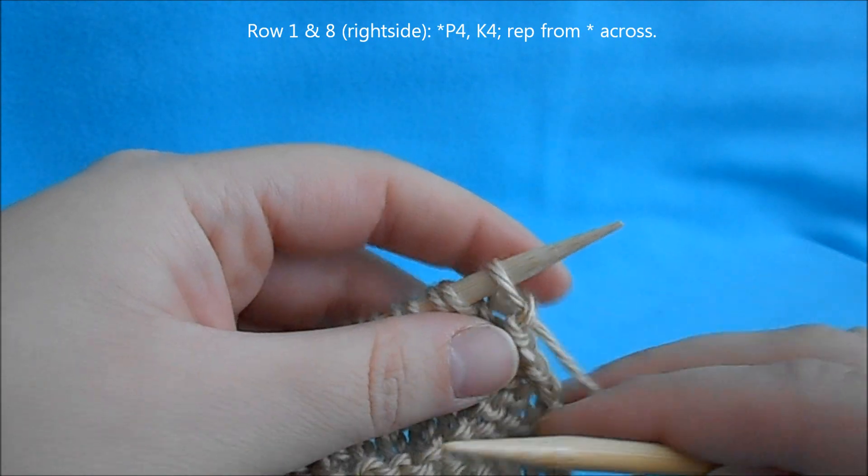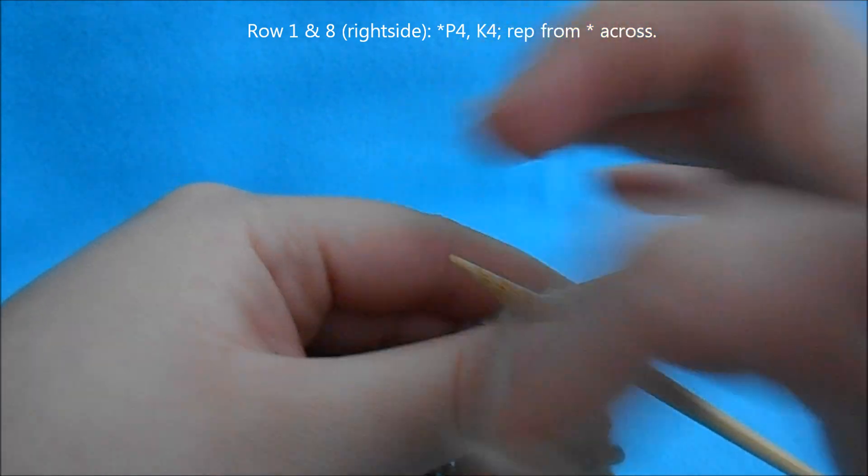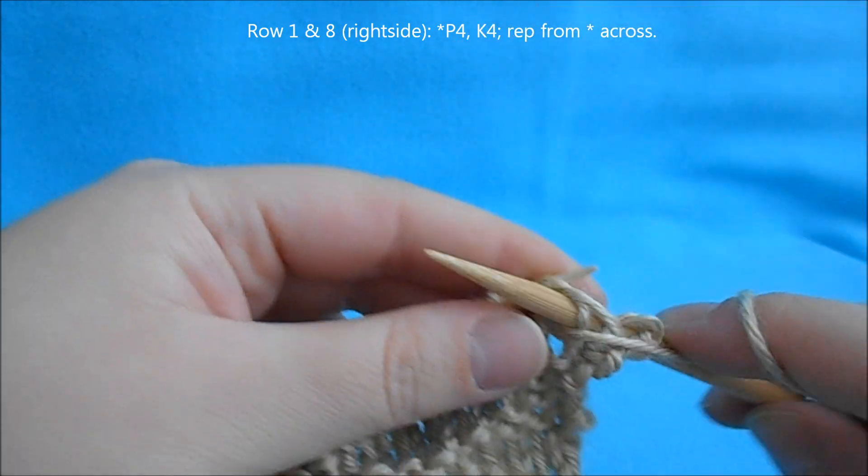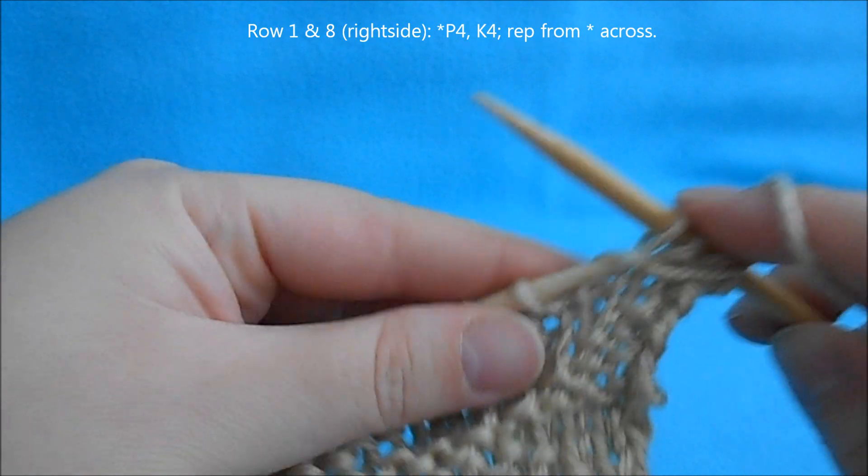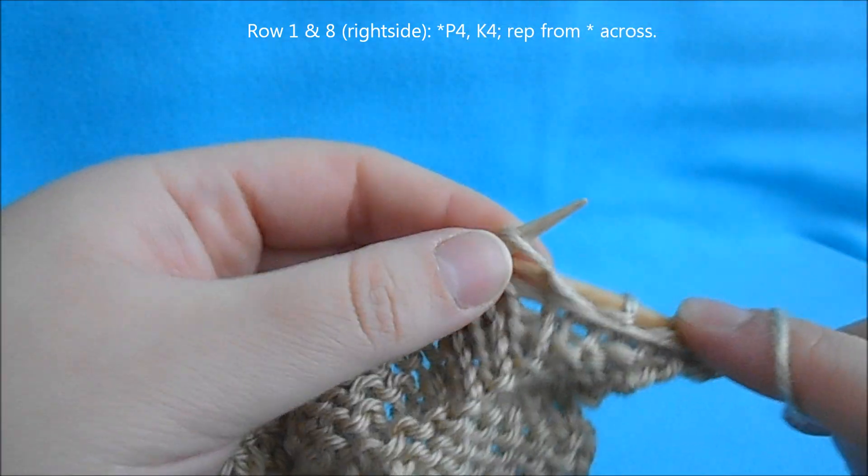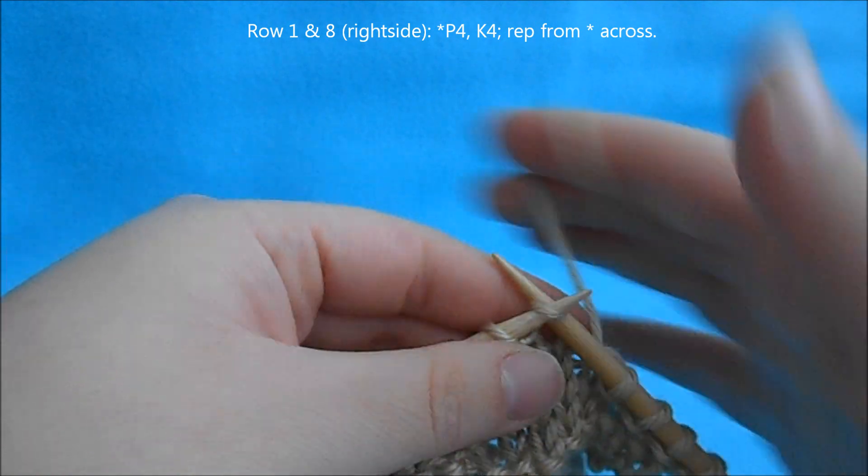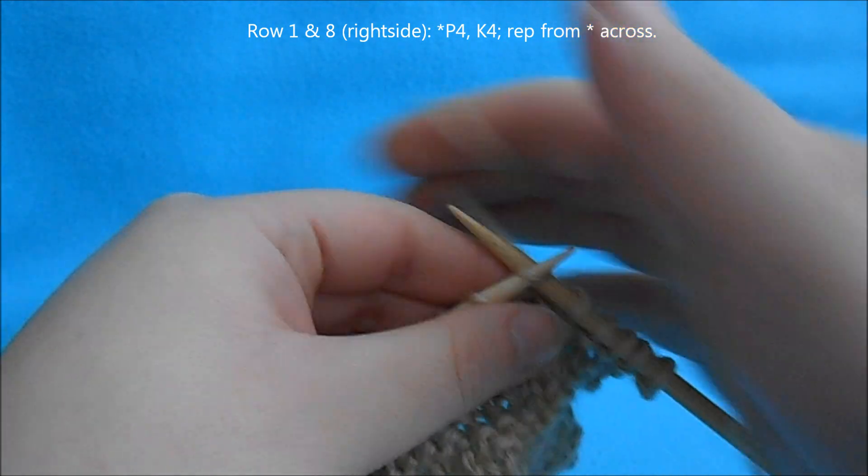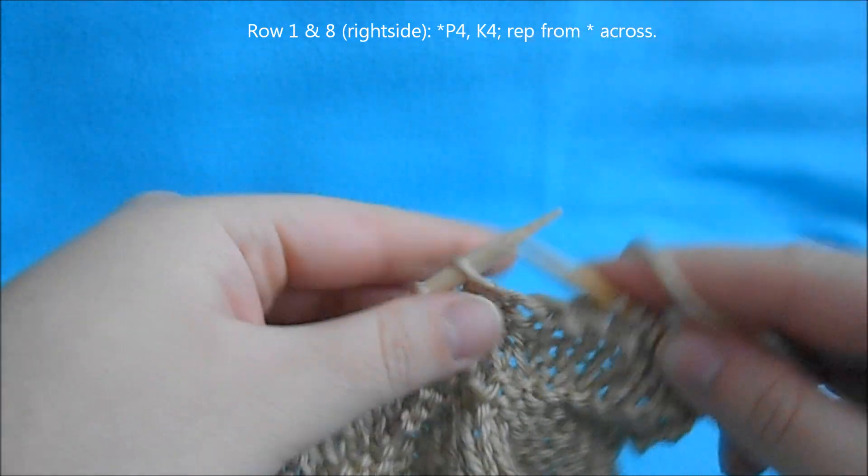For those rows, we're going to begin a repeat of purl 4, knit 4, and you're going to repeat that all the way across.